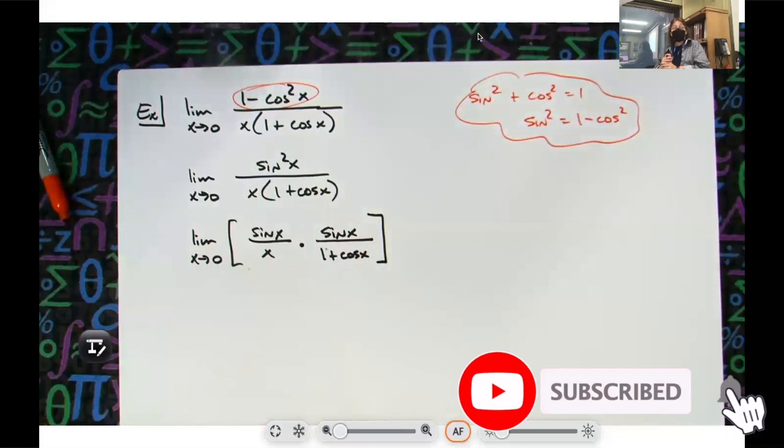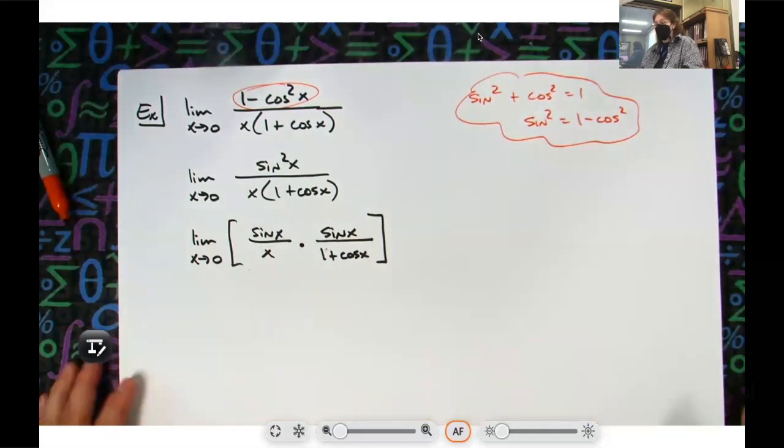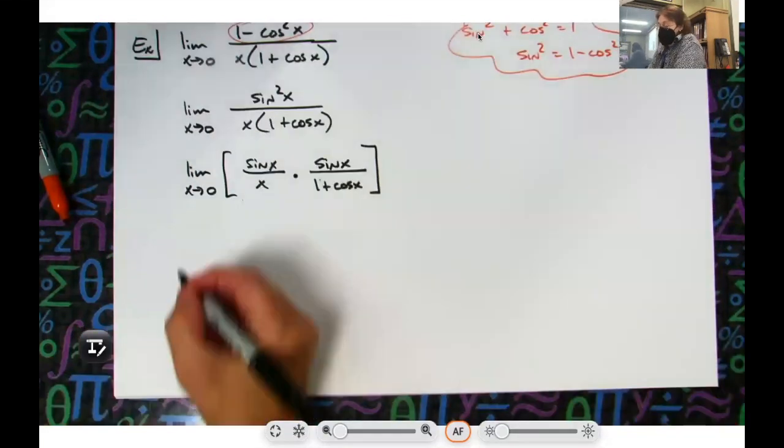All right, and again, I could use my limit properties and separate these out and write them as two individual limits. Which let's go ahead and do that.